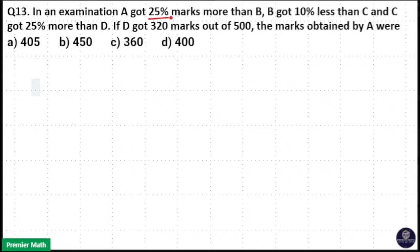In an examination, A got 25% marks more than B, B got 10% less than C and C got 25% more than D. If D got 320 marks out of 500, the marks obtained by A were.